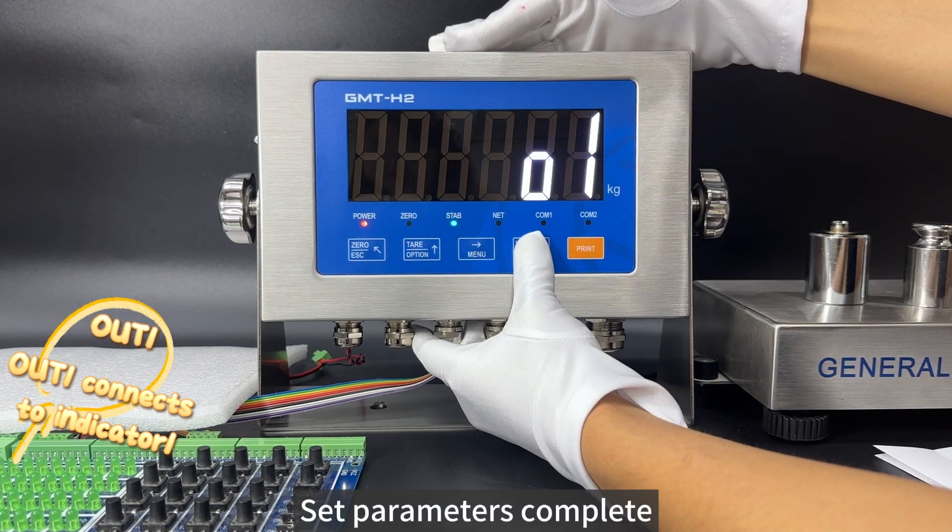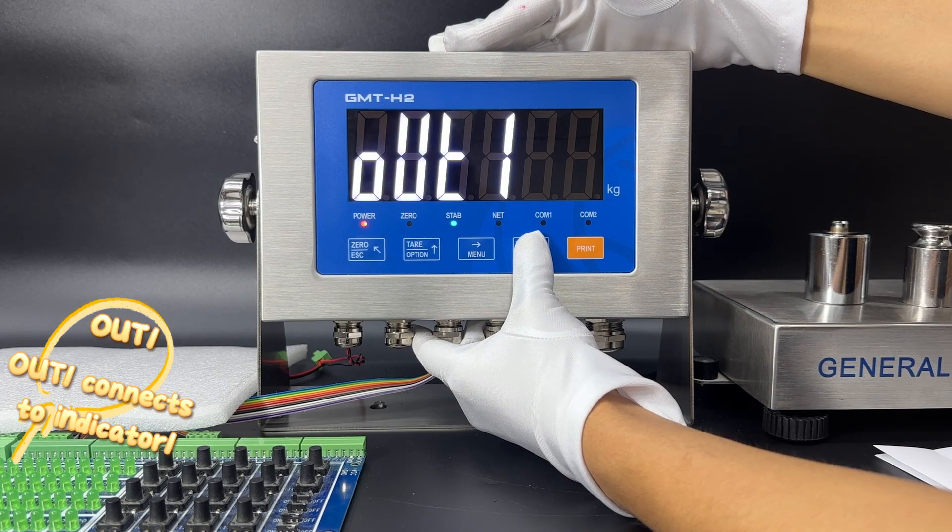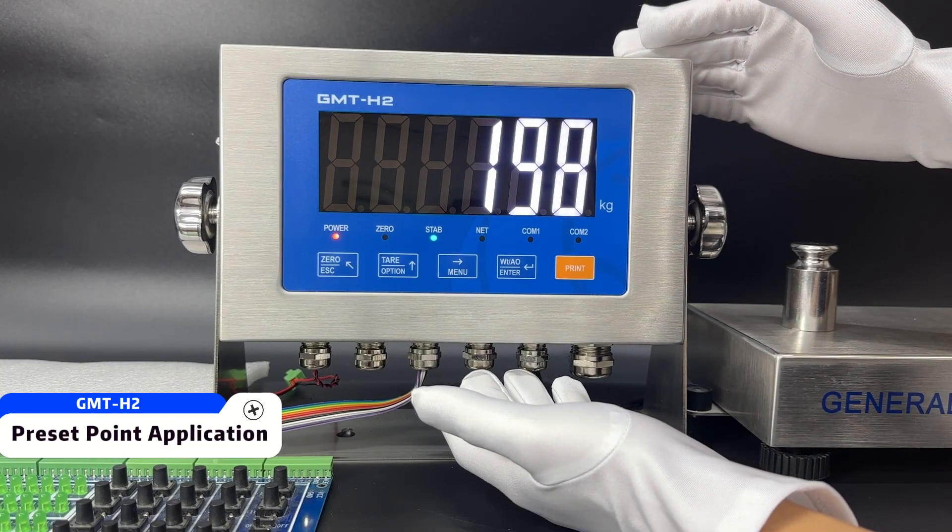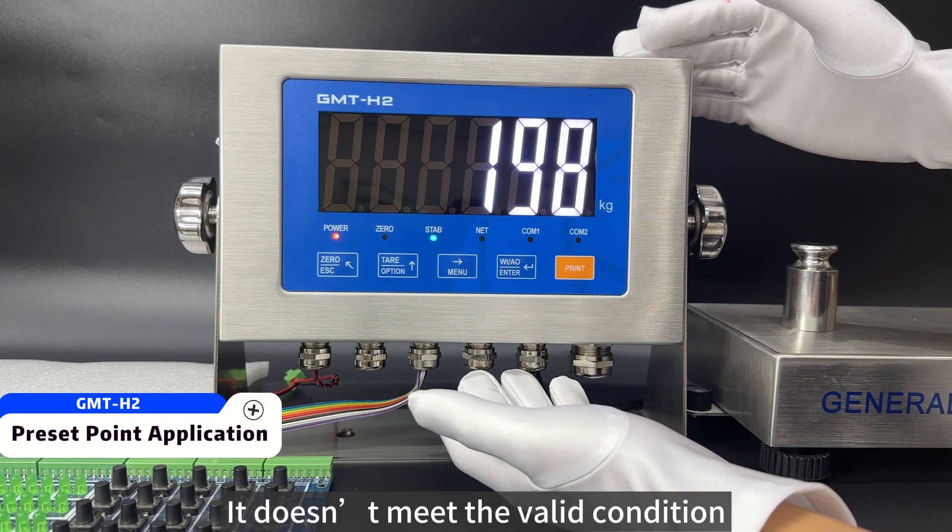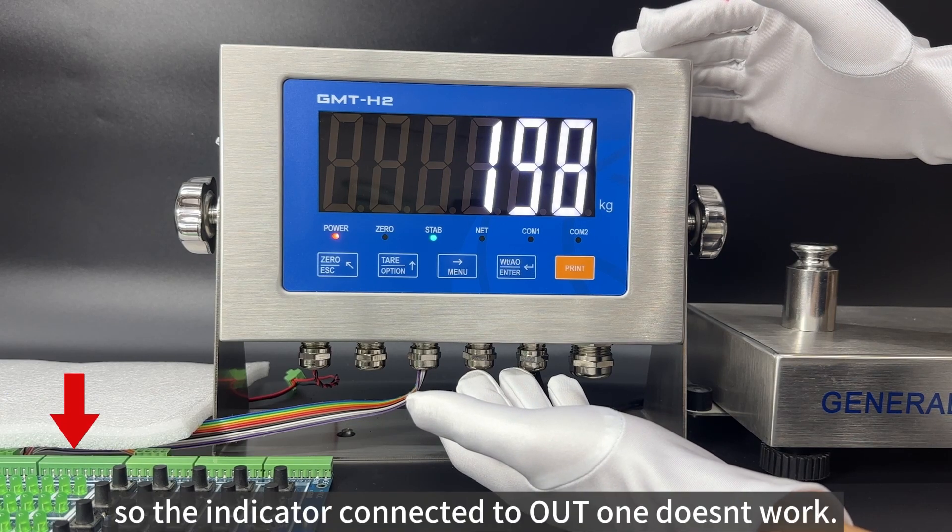Set parameters complete. The current weight is greater than 100. It doesn't meet the valid condition, so the indicator connected to OUT1 doesn't work.